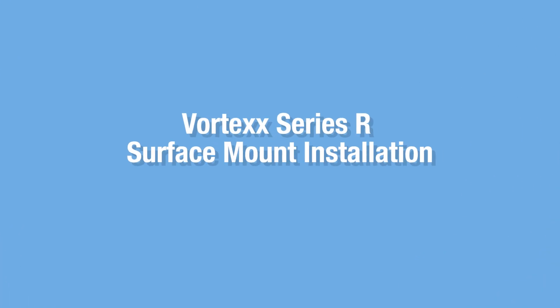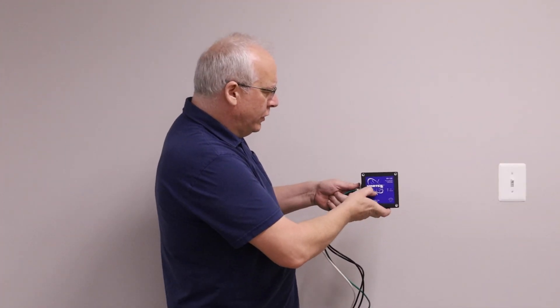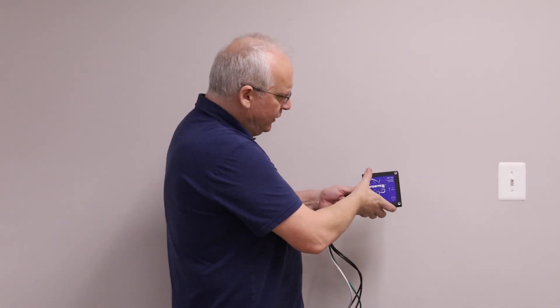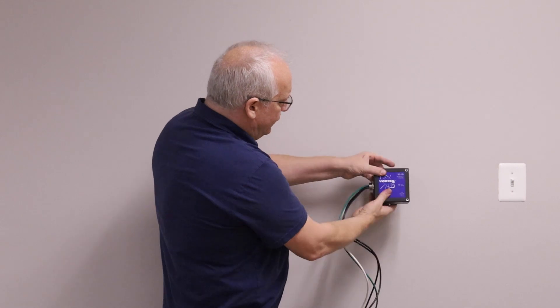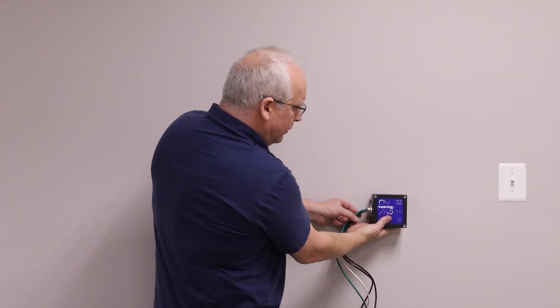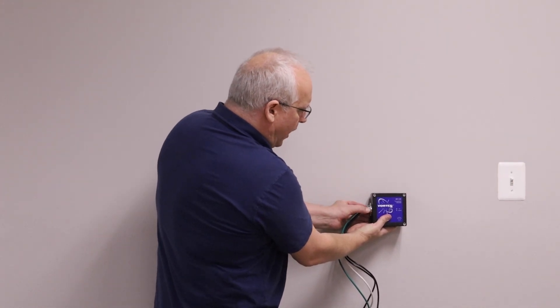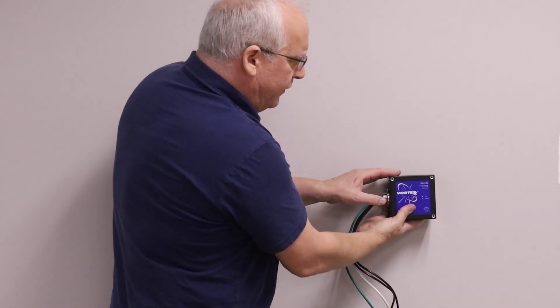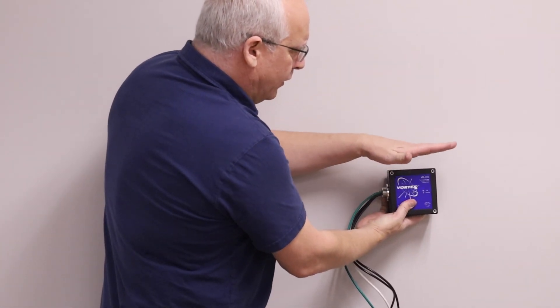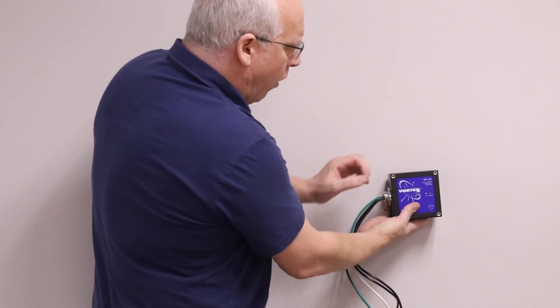For mounting onto a surface mount panel, the Vortex Series R is UL listed as a nipple mount device. That means that you only need to secure the nipple, insert the nipple into your enclosure, secure it with a lock ring and that's it. You don't need to secure the surge protector itself to the wall.